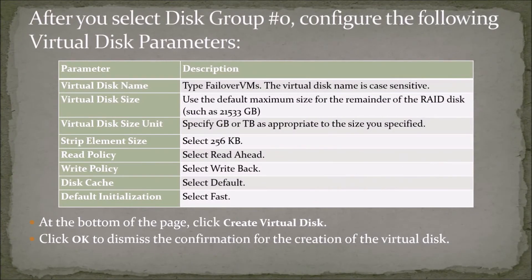After you select disk group number 0, configure the following virtual disk parameters: Virtual disk name — type Failover VMs. The virtual disk name is case sensitive. Virtual disk size — use the default maximum size for the remainder of the RAID disk, such as 21,533 GB. Virtual disk size unit — specify GB or TB as appropriate to the size you specified. Strip element size — select 256 KB. Read policy — select Read Ahead. Write policy — select Write Back. Disk cache — select Default. Default initialization — select Fast.